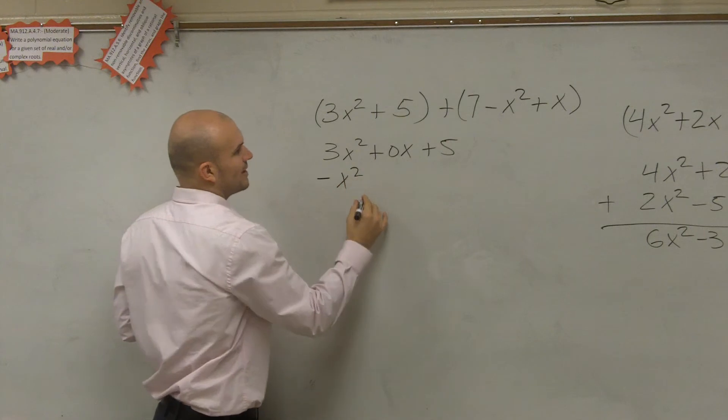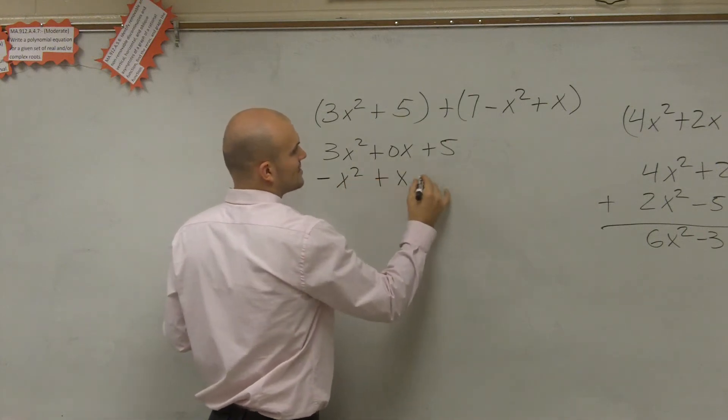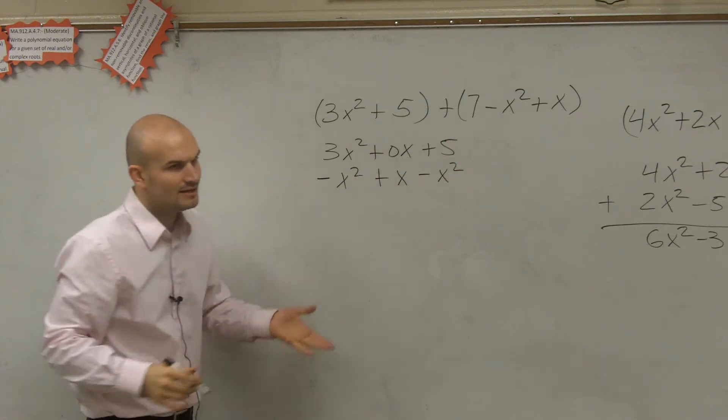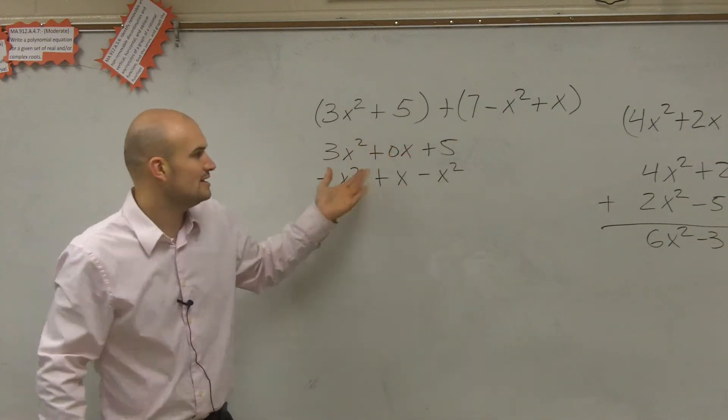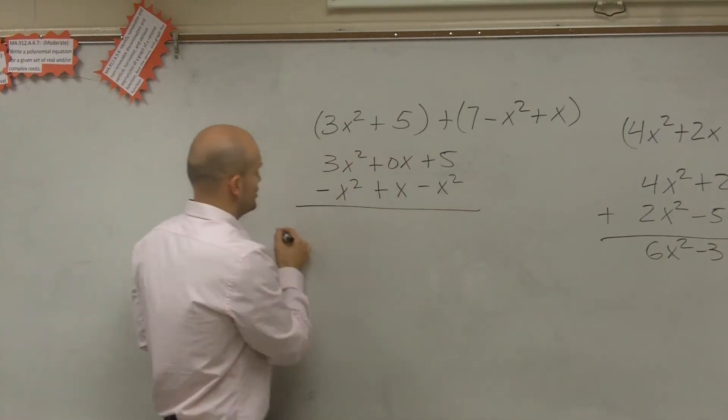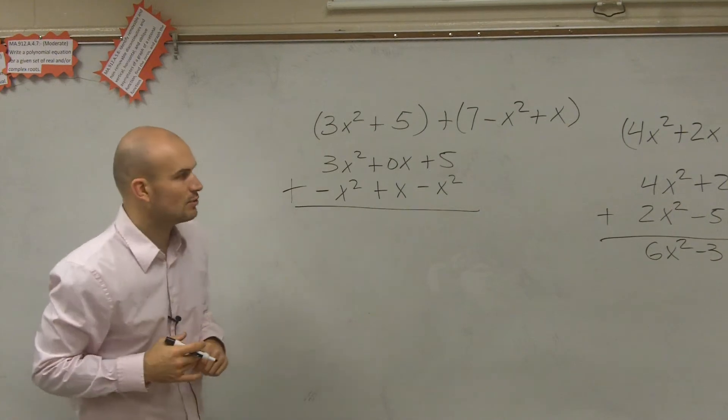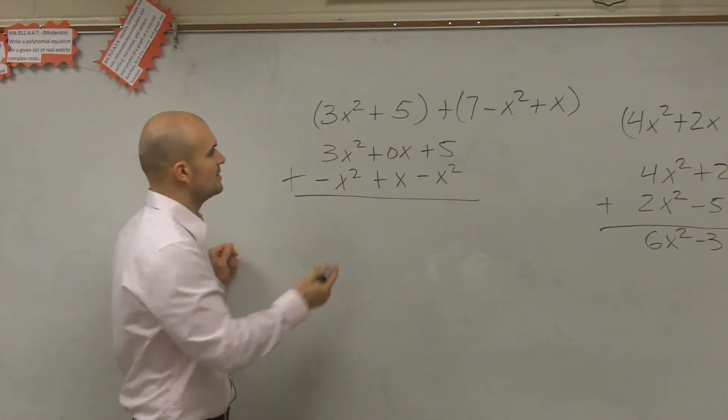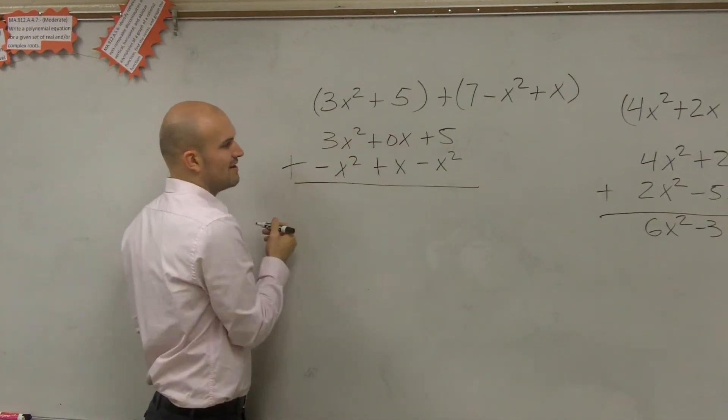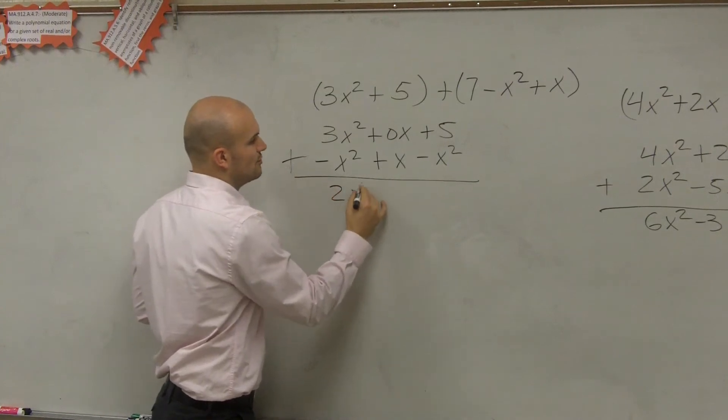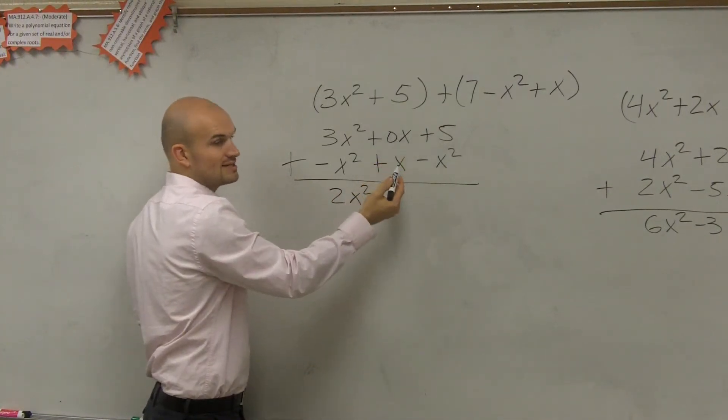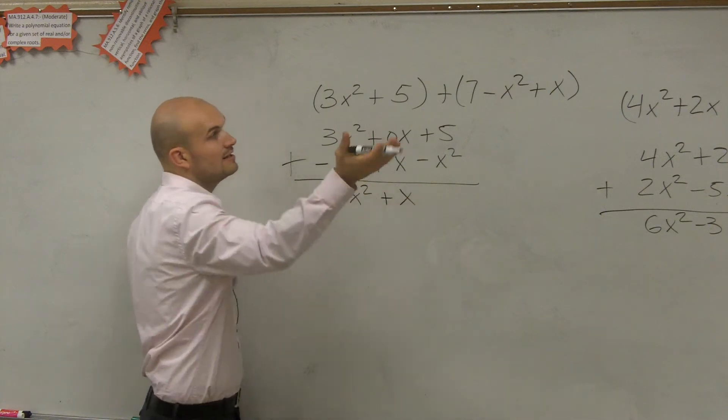So therefore, it's negative x squared plus x plus 7. Now again, you could leave this as the 0x or plus x. Either way, when you add, you'll see it's not going to change. So let's add our two equations, because that's what it's asking us to do. So I have 3x squared plus negative x squared is just going to leave me with 2x squared. 0x or just 0 plus x is just going to leave me with x.